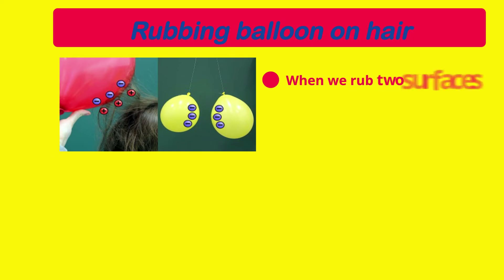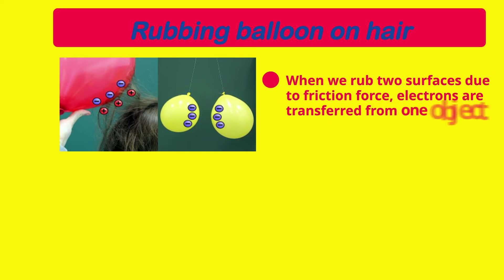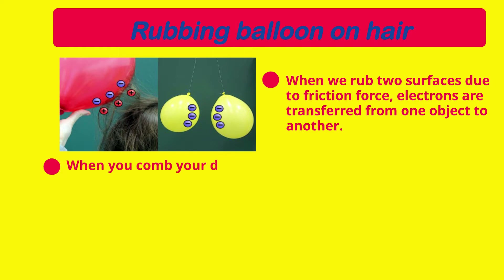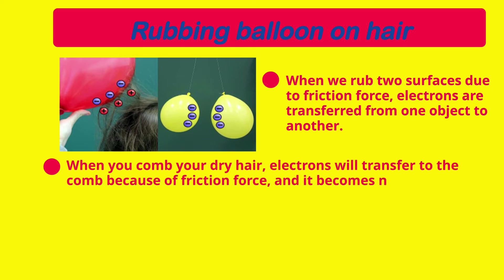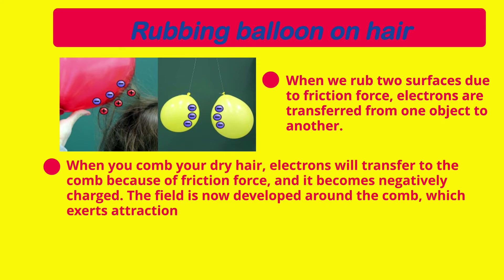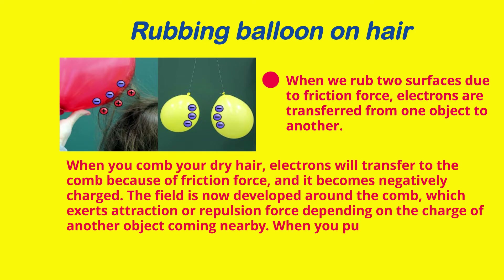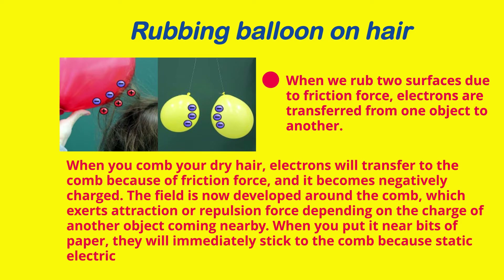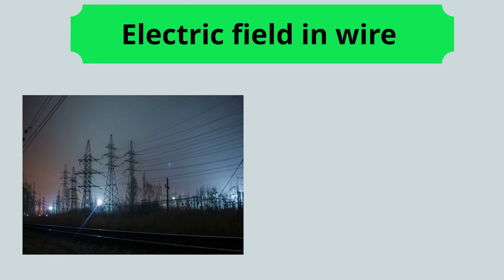When we rub two surfaces together, due to friction force, electrons are transferred from one object to another. When you comb your dry hair, electrons transfer to the comb due to friction force and the comb becomes negatively charged. A field develops around the comb which exerts attraction or repulsion depending on the charge of a nearby object. When you put it near bits of paper, they immediately stick because static electricity is generated in the range of the comb's field.